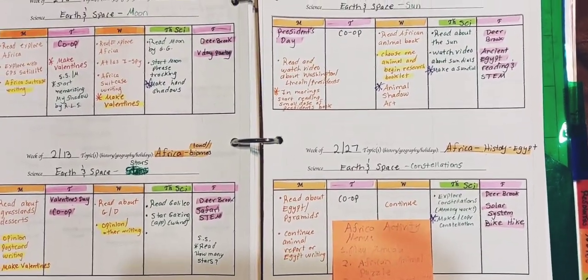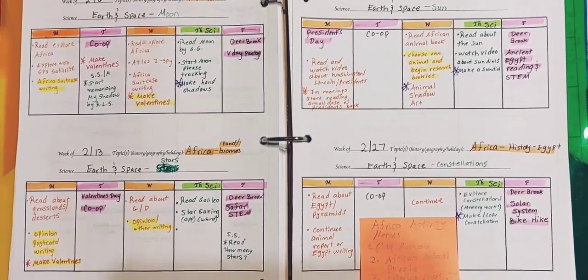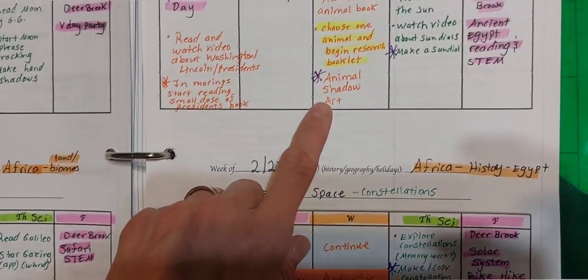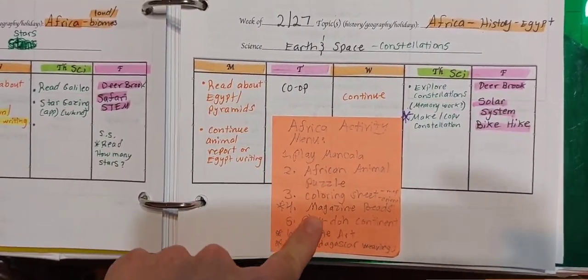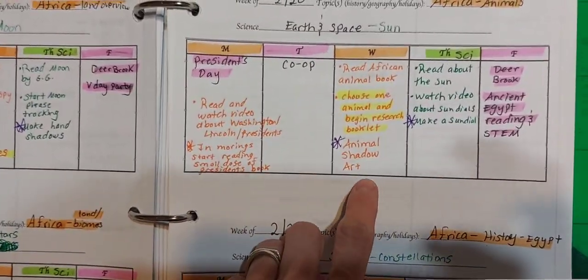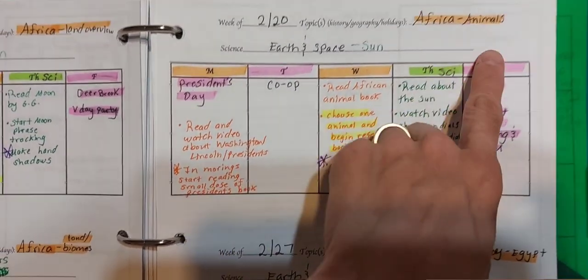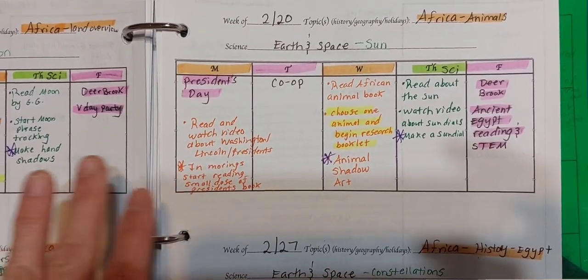So last thing I did was go on Pinterest. I made a Pinterest board for Africa and I put any ideas I liked for activities. And then something I added that, you know, this is where he can like kind of pick if we want to kind of thing. And then I put in activities I just really want to make sure we get to unless he really doesn't want to.